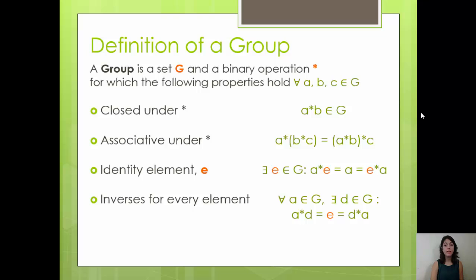And for these last two properties, it doesn't matter which order we operate the two elements in. So for the identity element, we can do A star E or E star A, and the same thing for the inverses — we can take the element star its inverse or the inverse star the element and still get E. We denote our groups with brackets: G for the group, the operation star, and then the identity element.